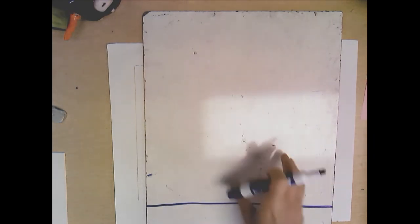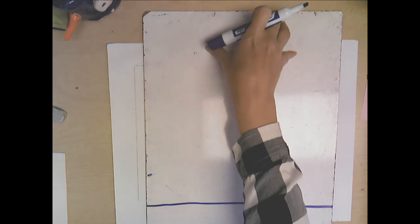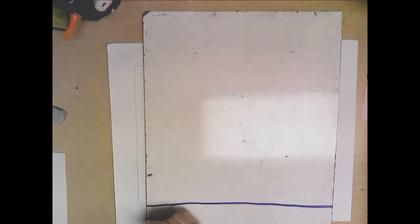So I would start by making a horizontal line across the bottom of your paper. Notice I'm working lengthwise because our building is going to take up a lot of space. I'm going to make another line, and this is going to be kind of like the sidewalk here.